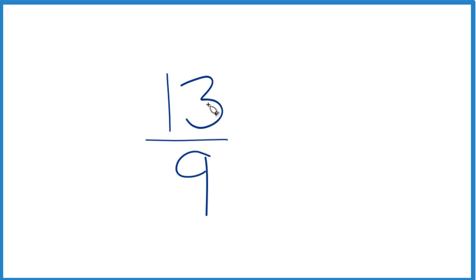But we can write 13 ninths as a mixed number. So here's how we do that. 9 will go into 13 just one time, and it has a remainder of 4. So we have 4, that'll become our numerator, and then the 9, we just bring this across for the denominator.